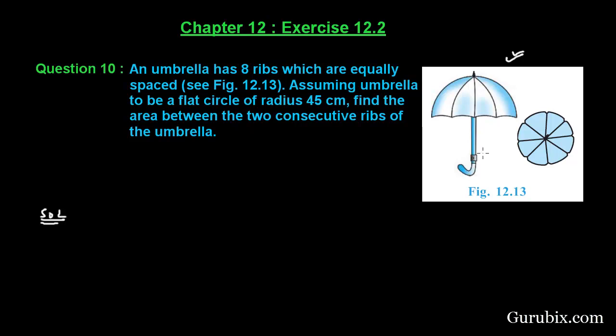This is a very easy question. You can observe this figure - these are the two consecutive ribs and we have to find the area between them. This means we need the area of this sector. Therefore, the radius of the circle will be 45 centimeters.